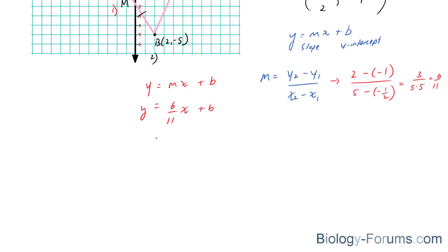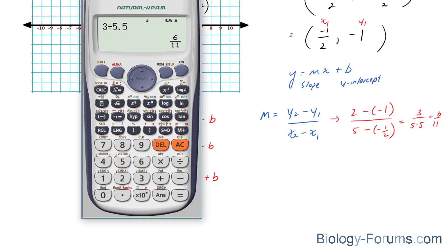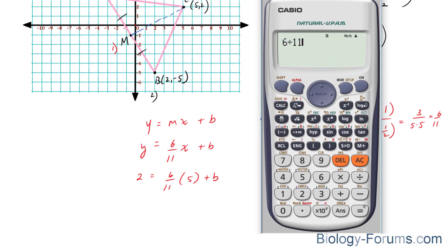So let's use 5 and 2. 2 equals 6 over 11 times 5 plus b. 6 over 11 times 5 is equal to 30 over 11.